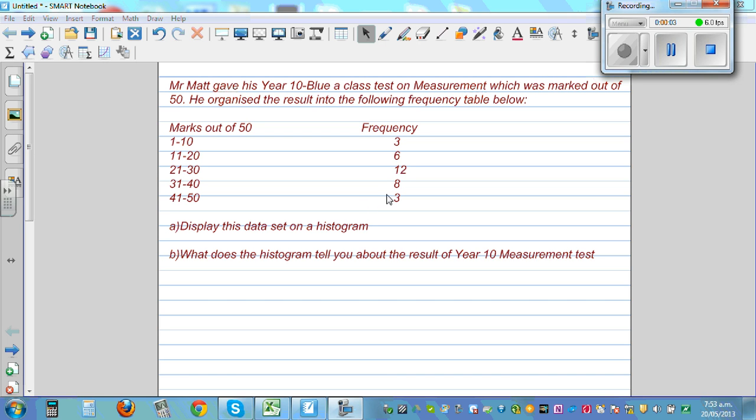Mr. Matt gave his Year 10 Blue class a test on measurement which was marked out of 50. He organized the results into the following frequency table below, and we need to do two things.